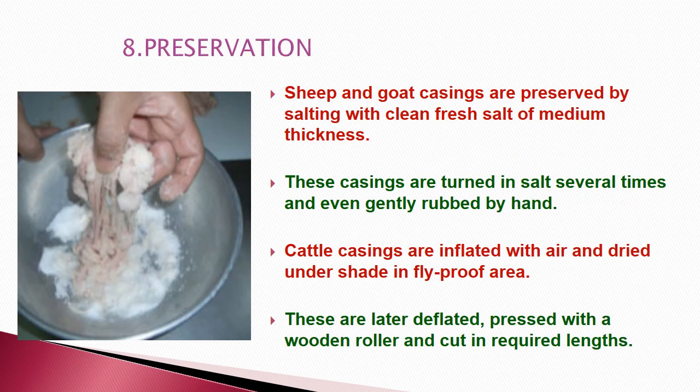Sheep and goat casings are preserved by salting with clean fresh salt of medium thickness — either dry salting with fine crystals or wet salting in a 40% sodium chloride brine solution, and can also be packed in containers. For cattle casings, they are inflated with air and dried under shade in a fly-proof area. After drying, the air is removed, they are flattened, measured in units of hangs, and cut to proper length.